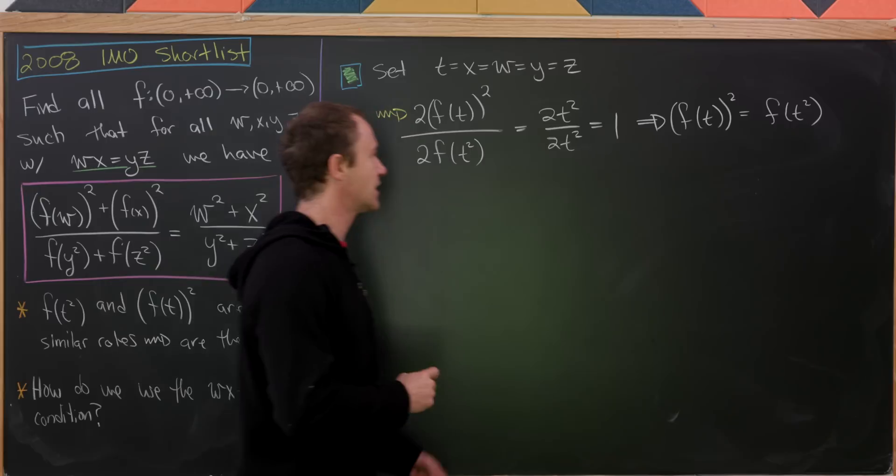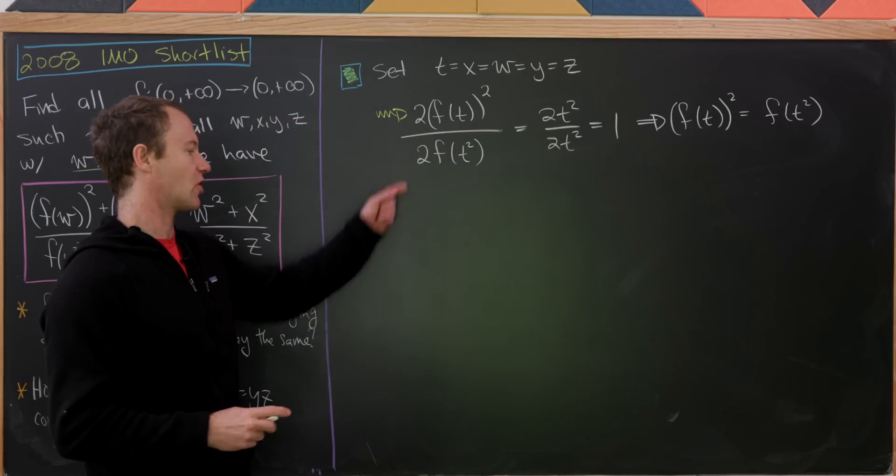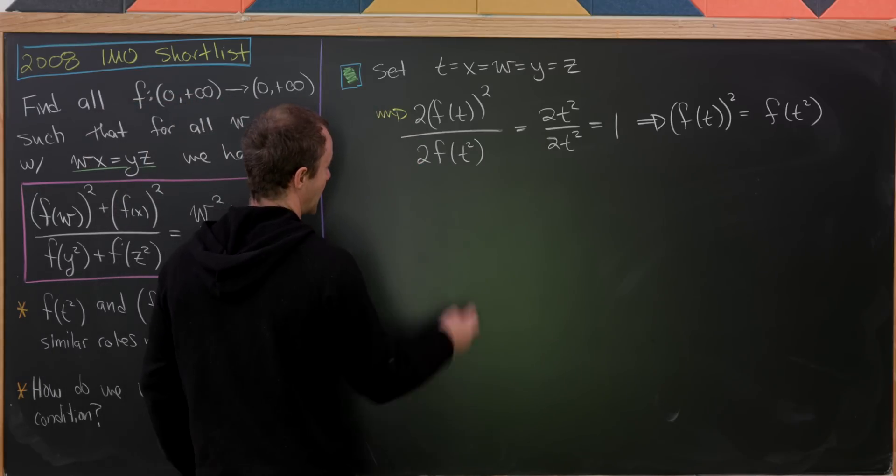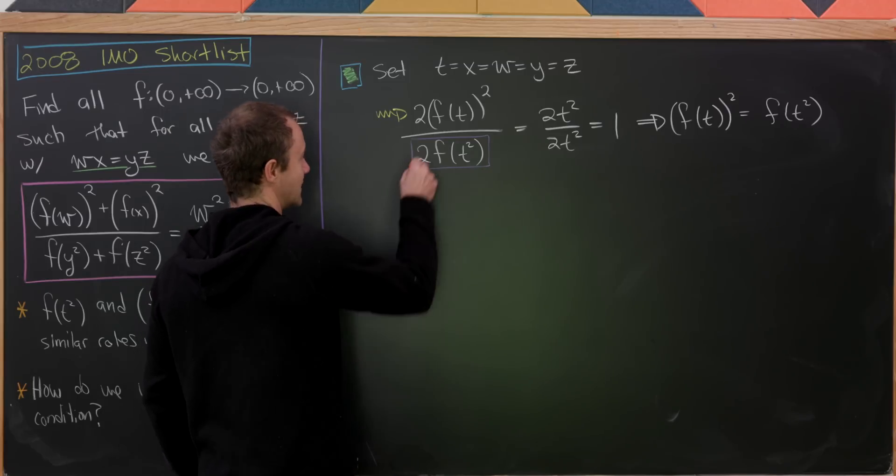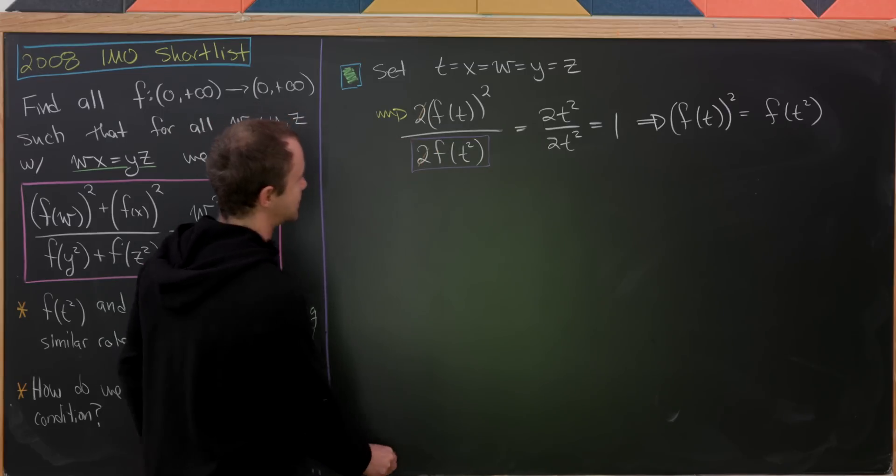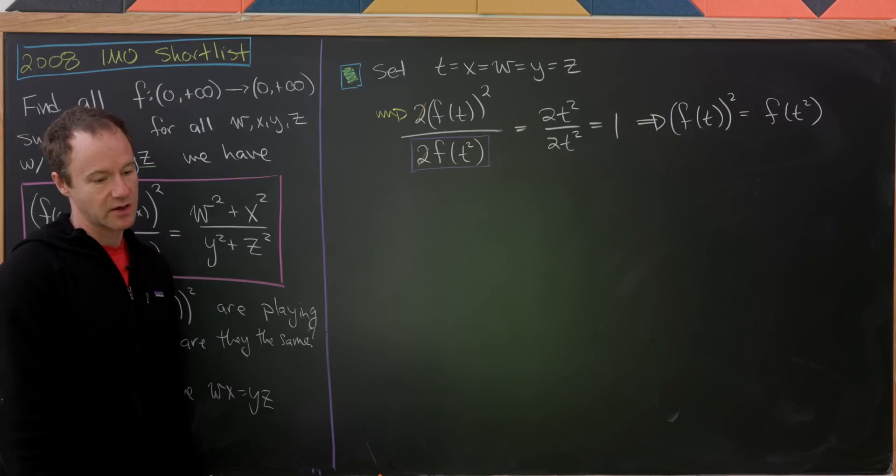So notice we have actually proven our first goal here. We have f(t²) equals f(t)². Great, which is what we wanted to do here. And that's obviously just by cross-multiplying by this denominator here and then simultaneously canceling these 2s.